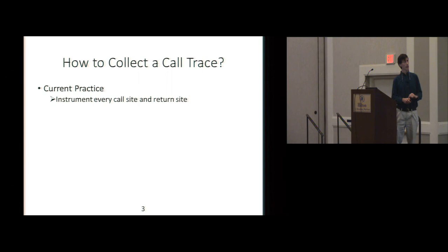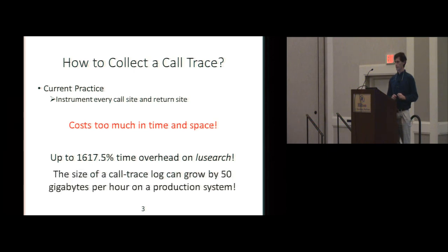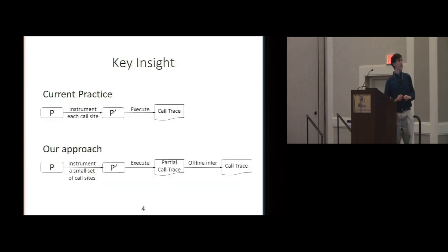Okay, so current practice is kind of brute force. You implement every call site and return site, and the problem here is that that costs a lot in time and space. So what the authors report is something like a 16-fold slowdown on at least one benchmark, if you do this, and the size of the call trace log can grow to, you know, by 50 gigabytes an hour on a production run. So their key insight is that instead of the conventional way of doing it, they're going to execute, they're going to have a sparser set of instrumentation sites that execute the program and collect what that set of instrumentation sites produce, and then they'll have an offline inference process that will recover the exact call trace out of the partial call trace. Okay? So it's sort of like an information recovery process.